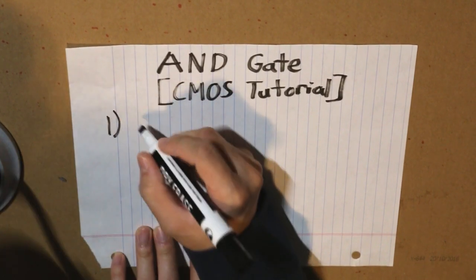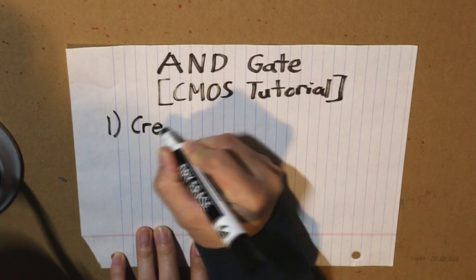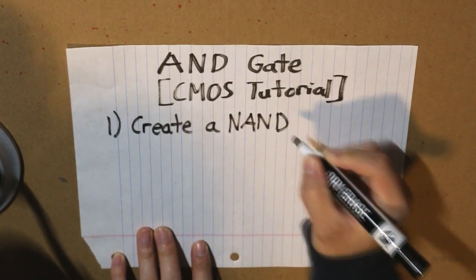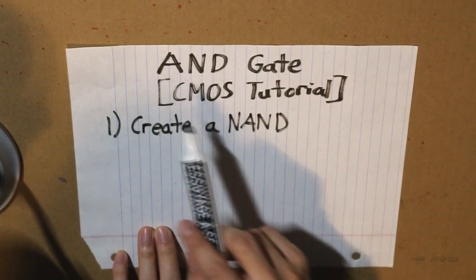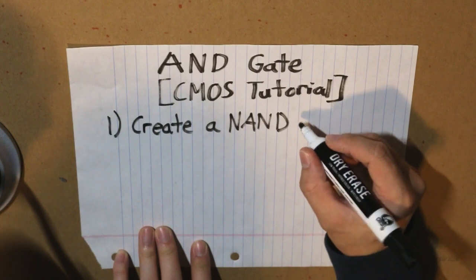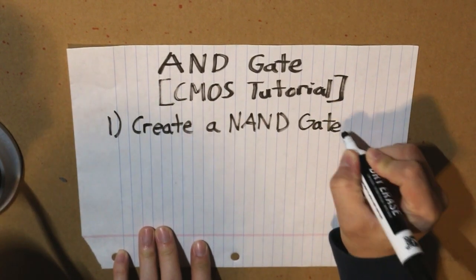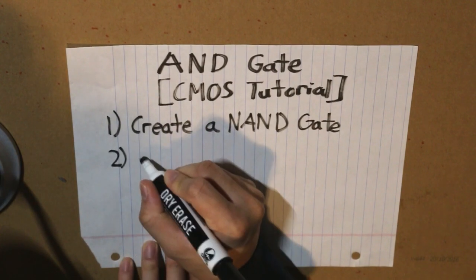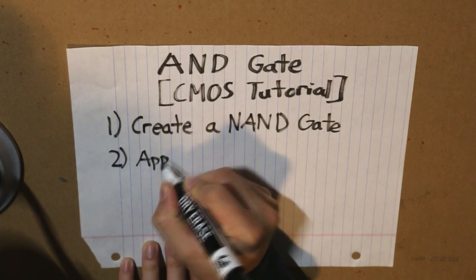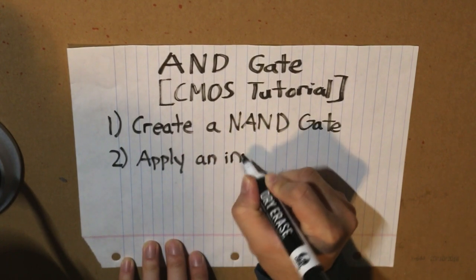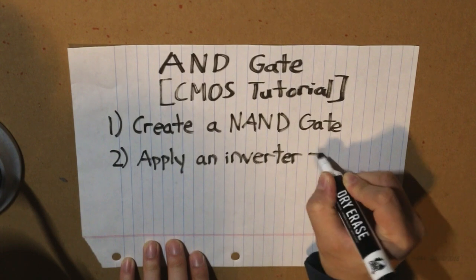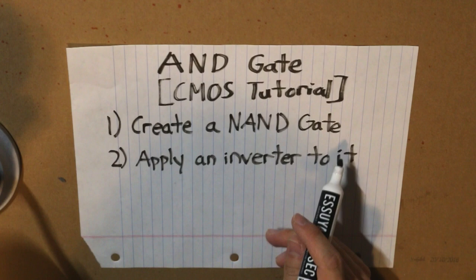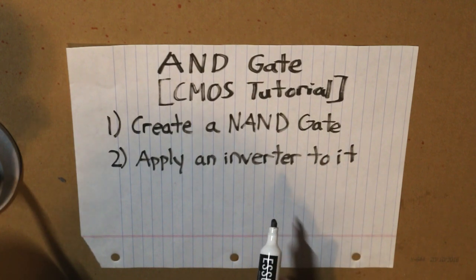What we need to do is to create a NAND gate first. There's a difference between NAND and AND, so we're going to create a NAND gate first. The second step is to apply an inverter to it, and by it I mean the NAND gate.